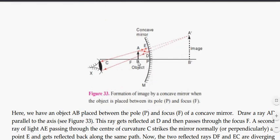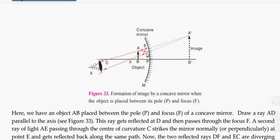Object arrow AB is placed between P and F. To find where the image forms, we follow the rules we learned. One ray from tip A travels parallel to principal axis, hits at point D, reflects from D, and passes through F going backward behind the focus. Second ray.